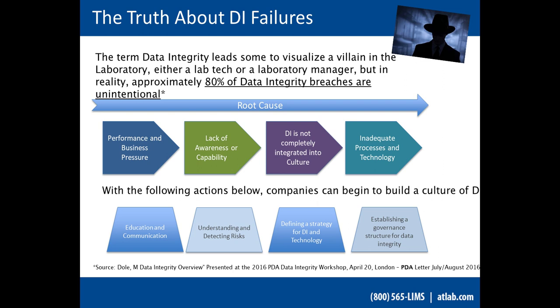Building a culture of data integrity is achieved through education and communication — making people understand the impacts of poor data quality — and understanding and detecting risk. When people understand the risk and why they're doing what they're doing, they're more likely to follow SOPs. Defining a strategy for data integrity and technology, making sure everyone is aware of the technology and how it's to be used, understanding the importance of high-quality data, and establishing a governance structure for data integrity can all help a company move in the direction of higher data integrity.